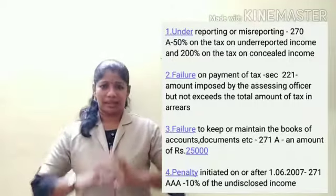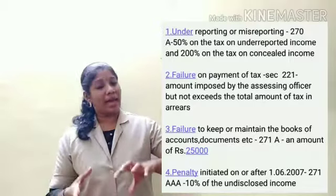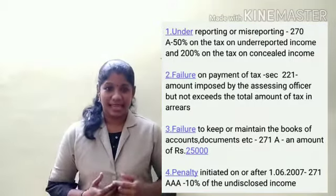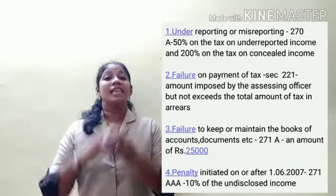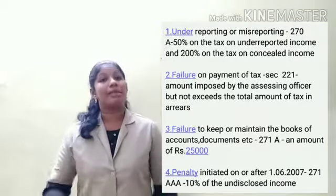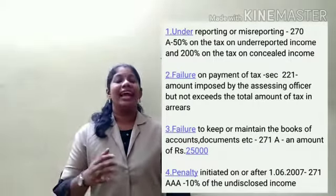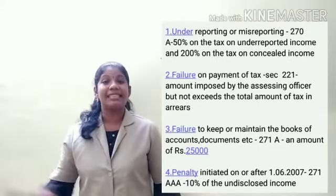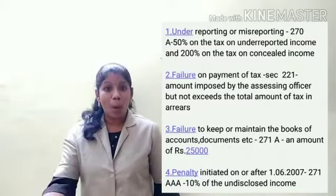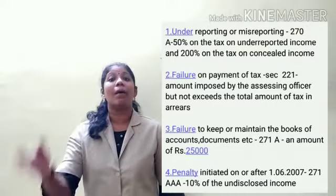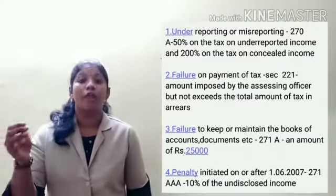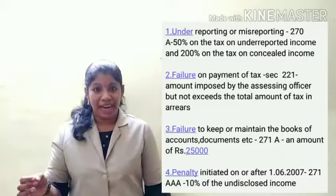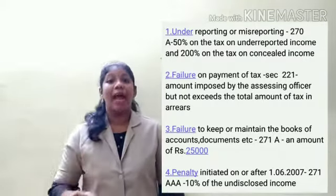The balance portion will be covered in class. Let's discuss about the situations in which the penalty is imposed by the Income Tax Authority. Number 1 is Misreporting of Income or Underreporting of Income, which is defined under Section 270A.